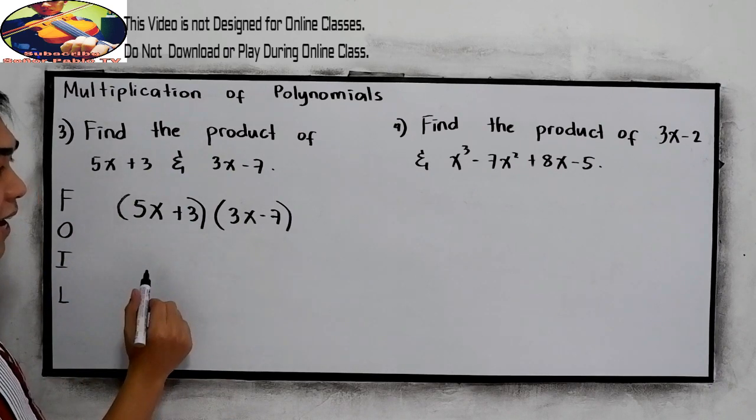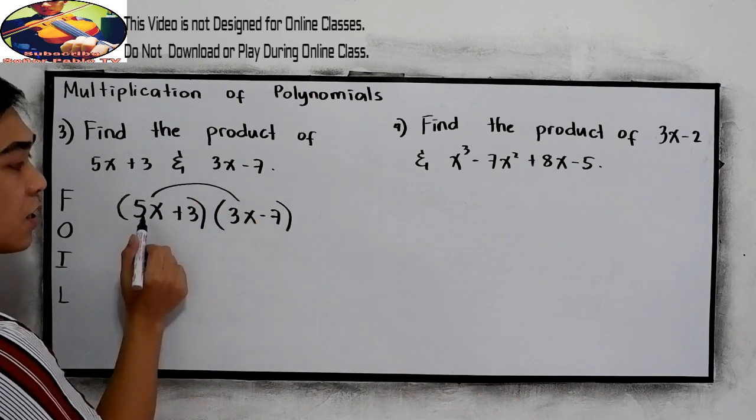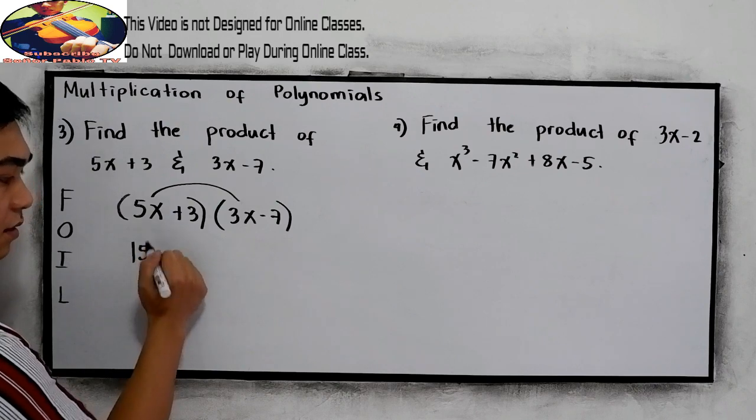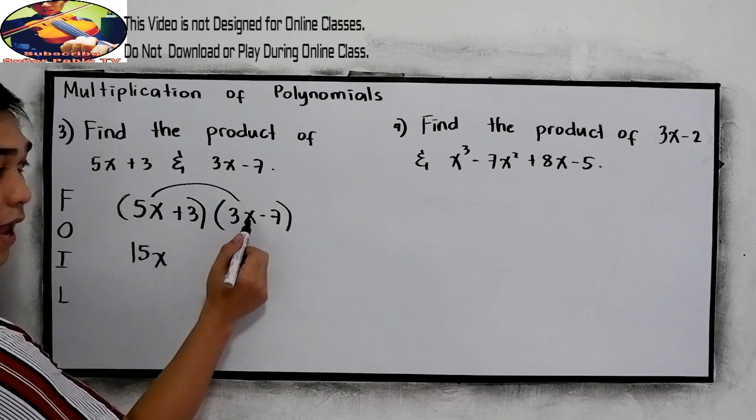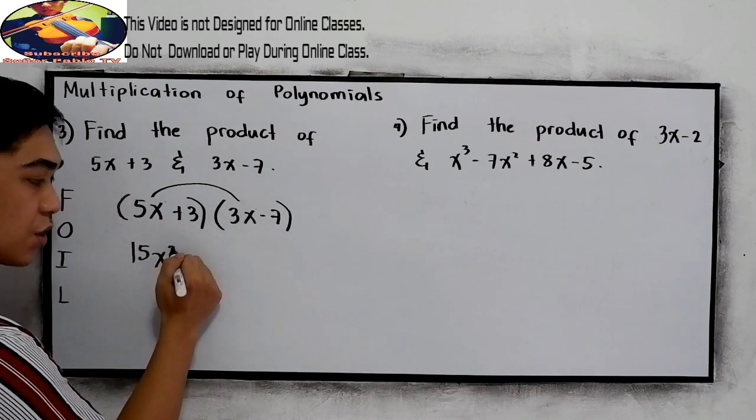So multiply the first, the first term, and the first term. So 5 times 3, that is 15. Copy x, then add the exponent 1 plus 1, which is 2.